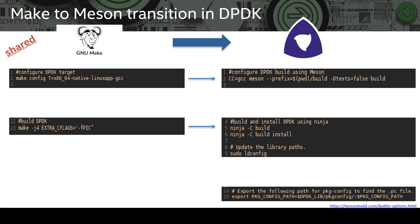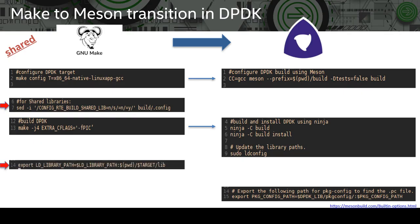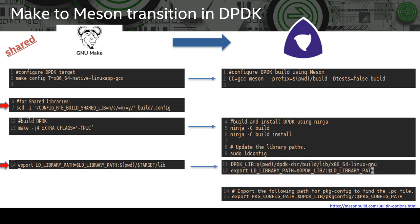Now in case of shared libraries — in case of Make, there is an extra step after configuration to set a specific variable to yes, and of course we must export the ld library path. Now in case of Meson, no extra configuration is required since both static and shared libs are built by default. So we only have to export the ld library path in this case.